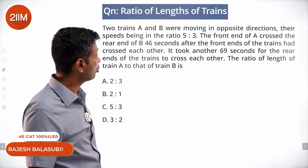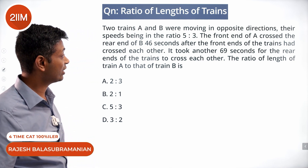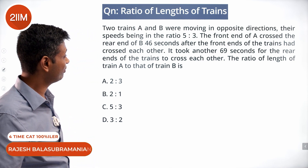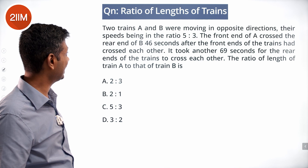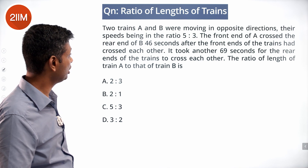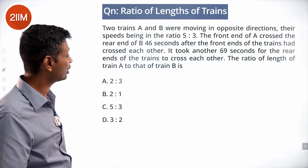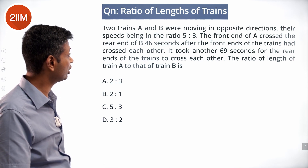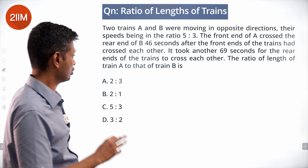Two trains A and B are moving in opposite directions, their speeds being in the ratio 5 is to 3. The front end of A crossed the rear end of B 46 seconds after the front ends of the trains had crossed each other.